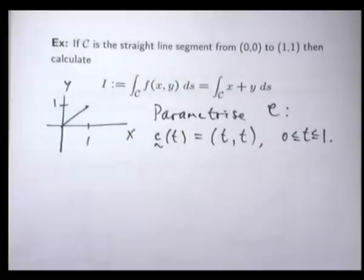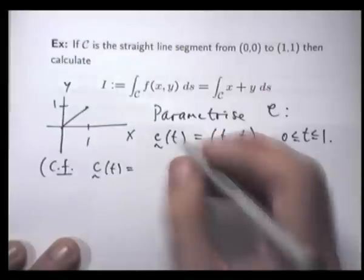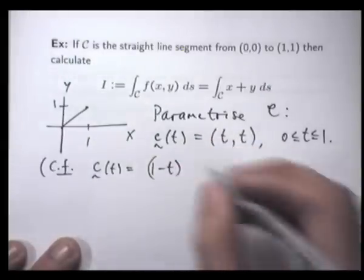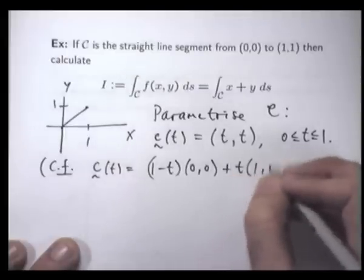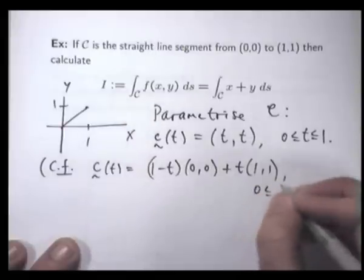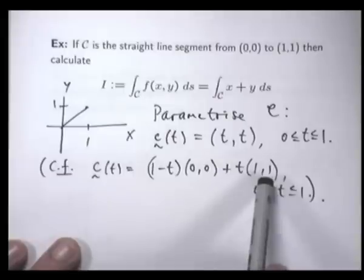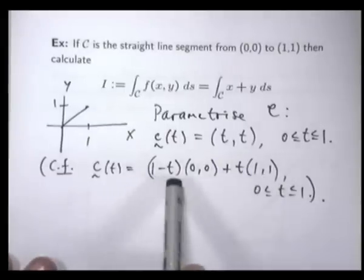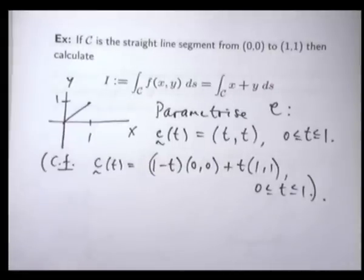Well, where did that come from? Well, it comes from the following. If you have a straight line segment between two points, you can use this algorithm here. So that's the starting point, that's the ending point, and they're multiplied respectively by (1 minus t) and t, and the interval is always from 0 to 1. It's a good formula to remember. Of course, you don't have to choose that parameterization. You can choose other ones as well.